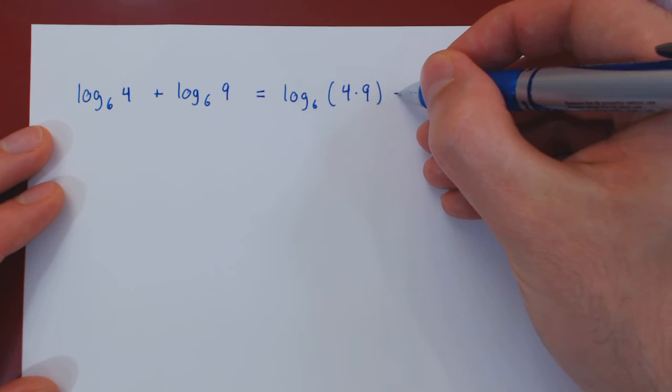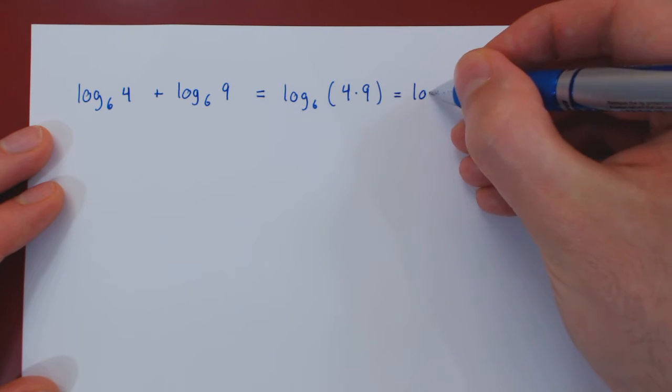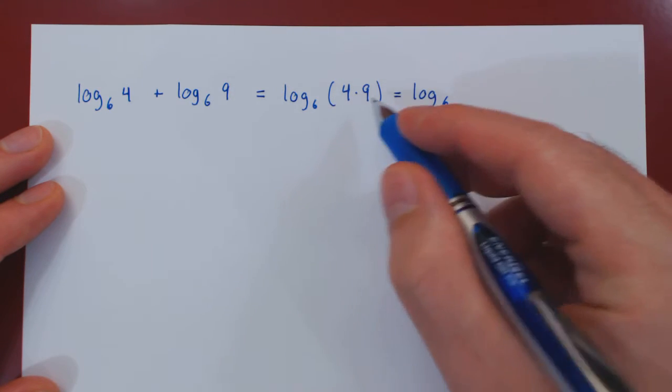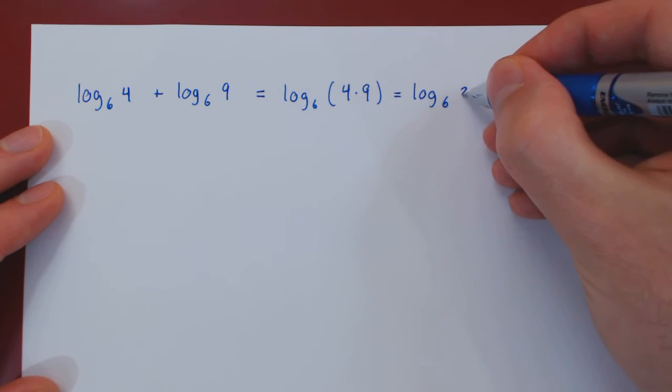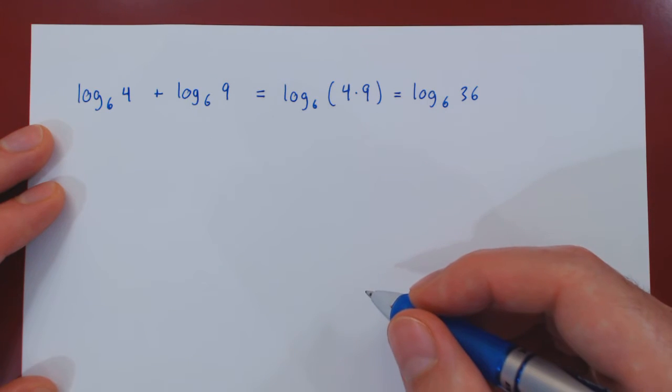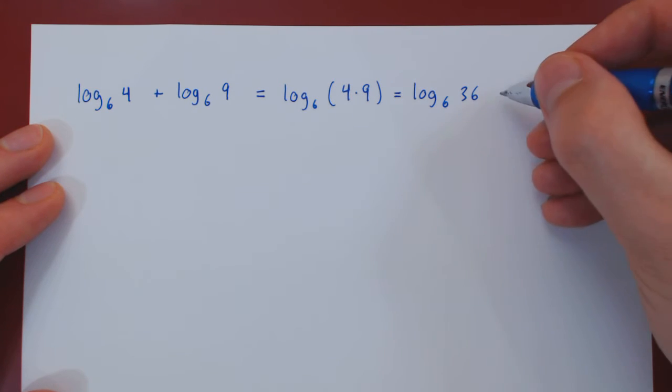And now what's interesting is that if you multiply 4 and 9, well 4 times 9 is 36. And 36 is a perfect square. It is 6 squared.